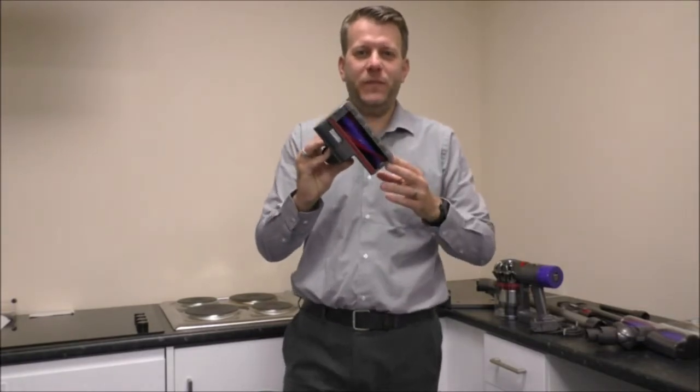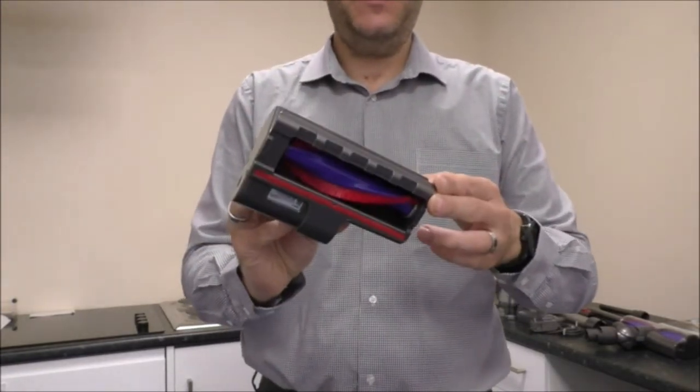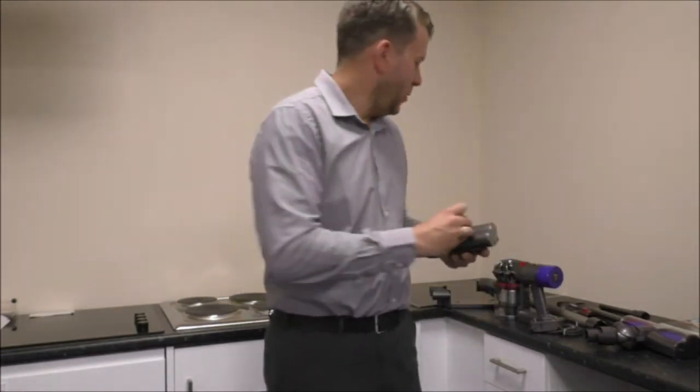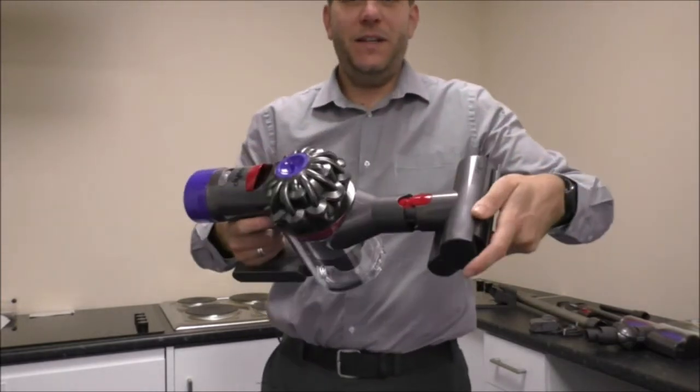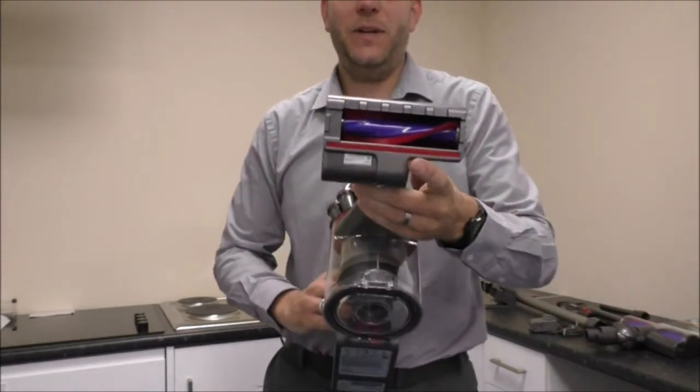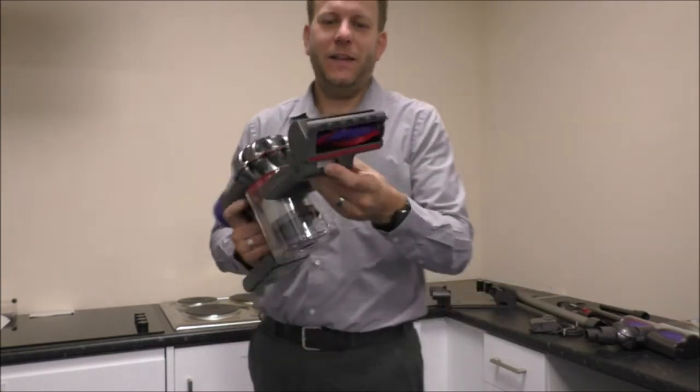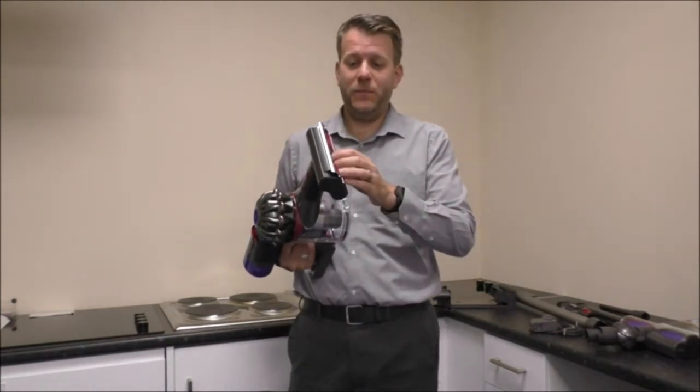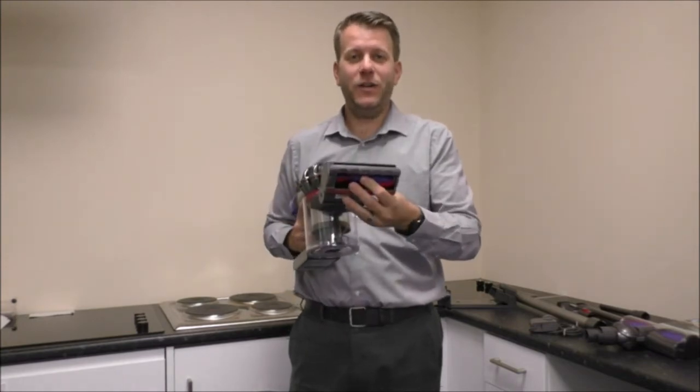So this is the next tool it comes with, this is the mini motorized tool and this is ideal for using it as the handheld vacuum cleaner. What you'll find, I'll just show you, is if you put that in here like that and if we get it going then that is an ideal tool. If you want to do the stairs or car for example then that can really get into the carpet and get a lot of dirt up.